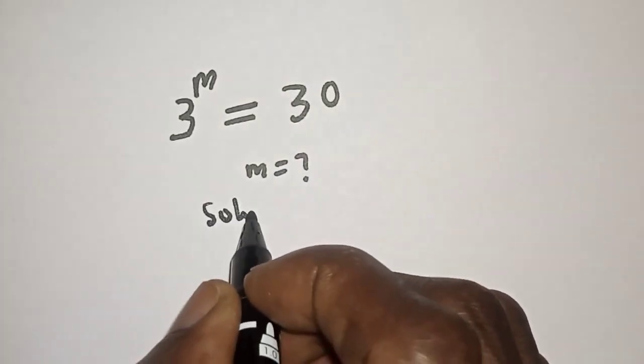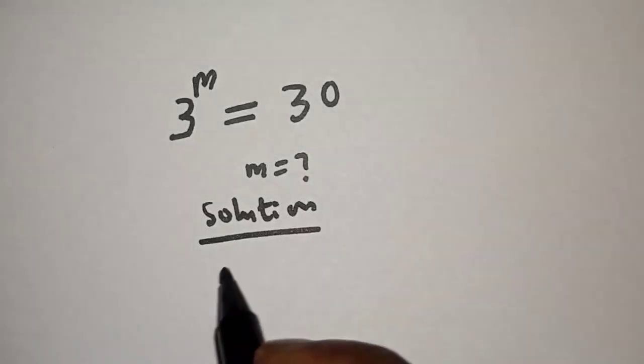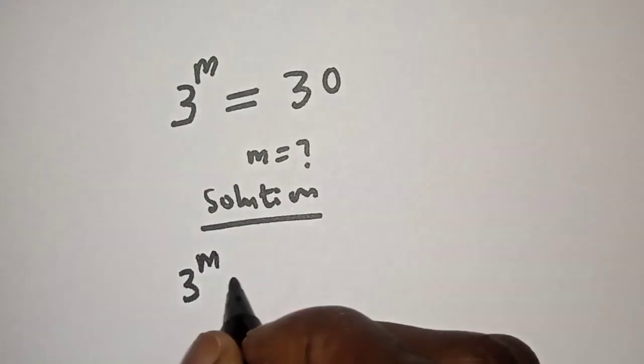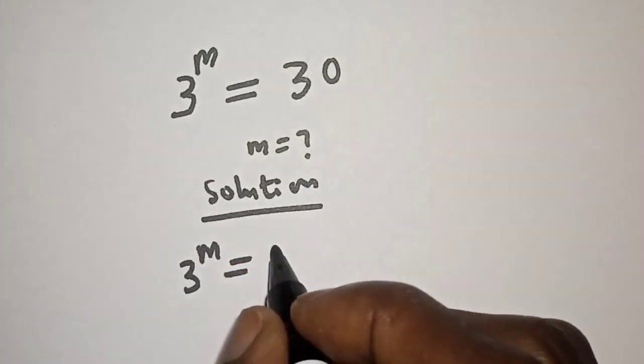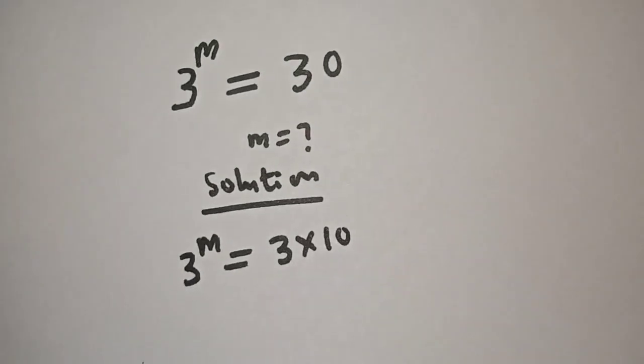Solution. We have 3 raised to power m is equal to 30, can be written as 3 multiplied by 10.